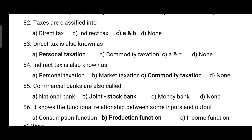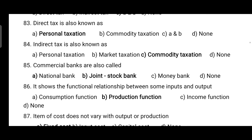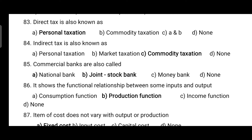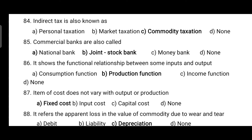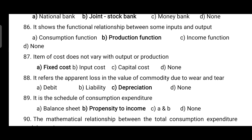Taxes are classified into direct tax and indirect tax. Indirect tax is also known as commodity taxation. Commercial banks are also called joint stock banks. Production function shows the functional relationship between inputs and output.